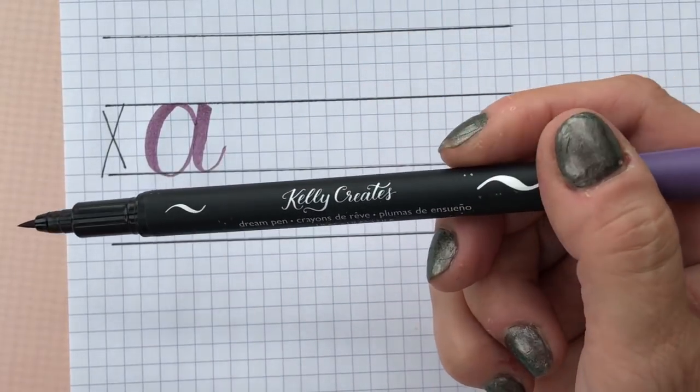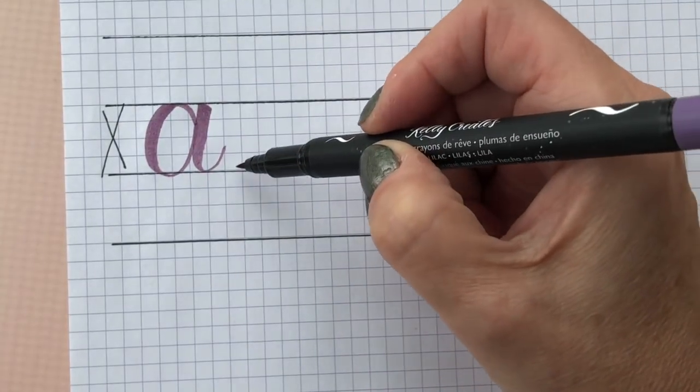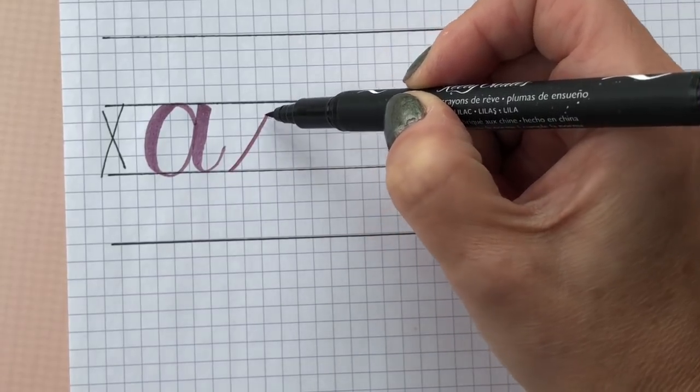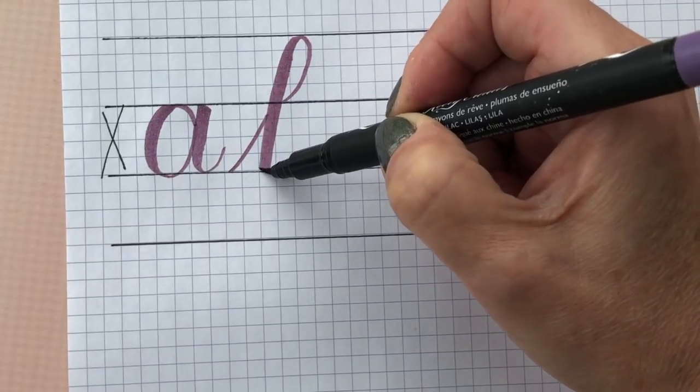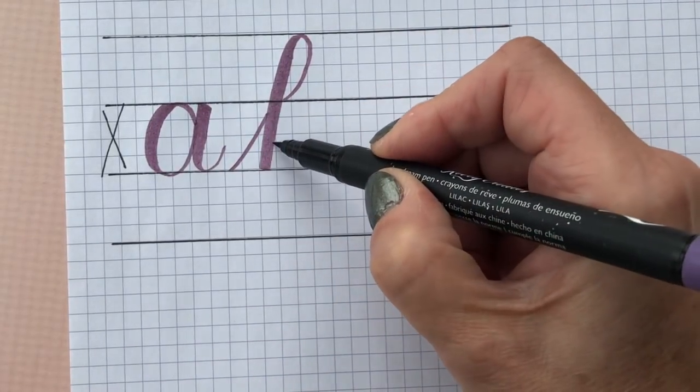This is my dream pen in lilac and I'm using the smaller side, the smaller nib. So if I'm doing a B, I am going to go up, touch that line, come down, touch my baseline. So here's my baseline and my waistline.